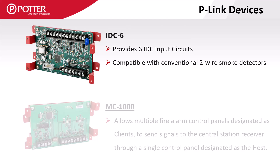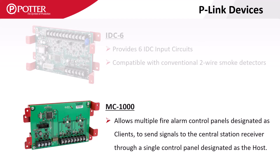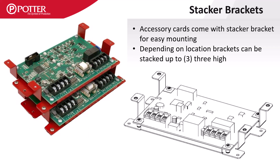The IDC-6 card provides a control panel with the ability to monitor six separate two-wire conventional smoke detector circuits. The MC-1000 allows one host control panel to report to the central station for up to 62 client panels. The stacker bracket mount saves space inside an enclosure by allowing the modules to easily stack on one another.